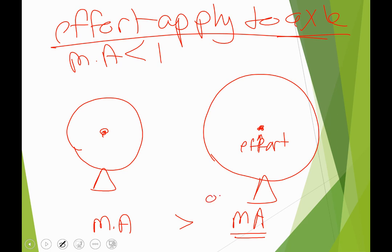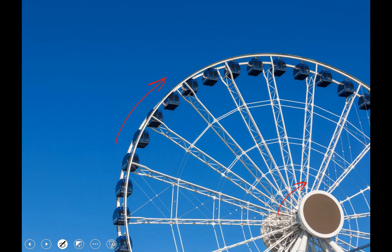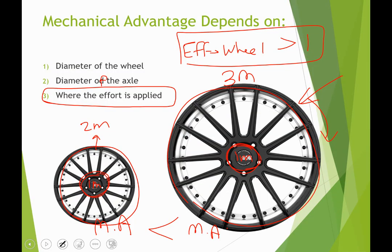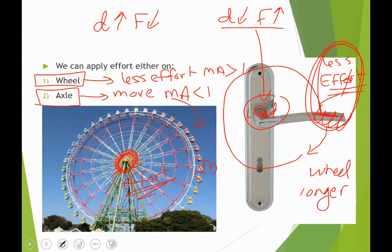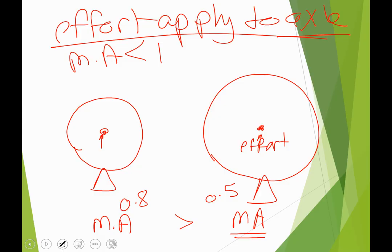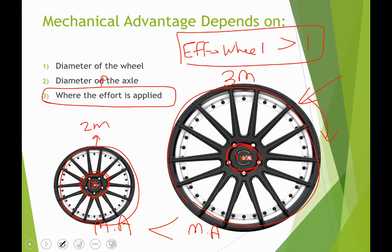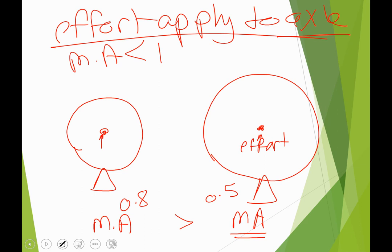For example, a smaller wheel might give 0.8 and a larger wheel 0.5 mechanical advantage when effort is on the axle. You need less effort to rotate a smaller wheel but more effort to rotate a bigger wheel. To sum up: when you apply effort to the axle, the larger the wheel the smaller the mechanical advantage; when you apply effort to the wheel, the larger the wheel the larger the mechanical advantage.